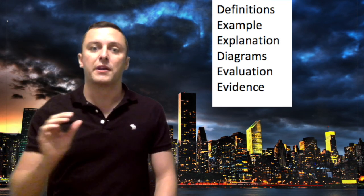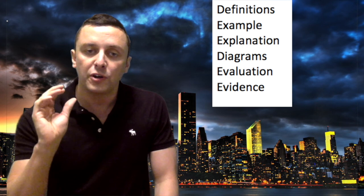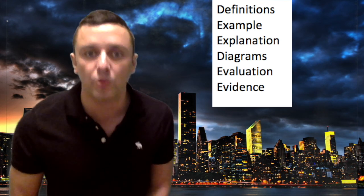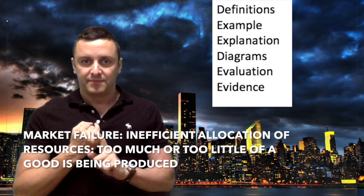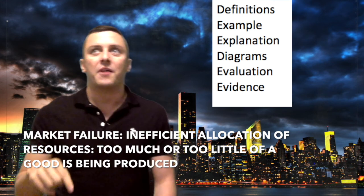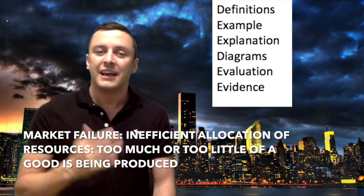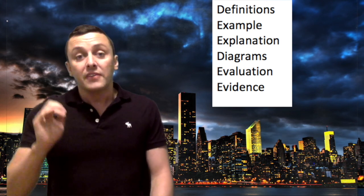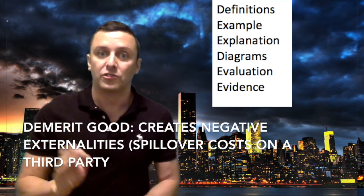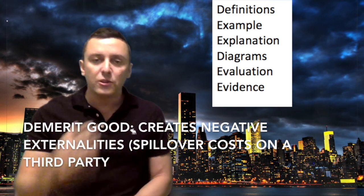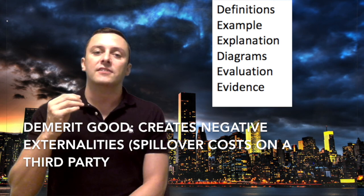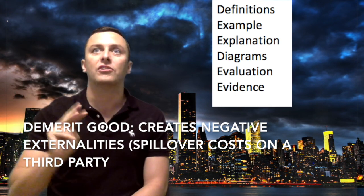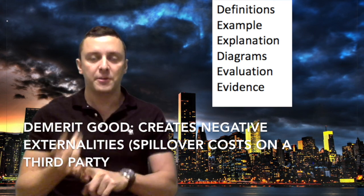Now we move on to the definitions part, that's the first D in DDEEDE. You're going to want to define the key economic concepts related to this topic. If it's sugar tax, you're going to want to define market failure. Market failure is where goods are misallocated - in other words, too little or too much is either being consumed or produced. The type of good we're talking about with sugar is a demerit good. A demerit good creates spillover effects on a third party, and these spillover effects or spillover costs are also known as externalities. So there we've got three good definitions: market failure, demerit goods, and externalities.